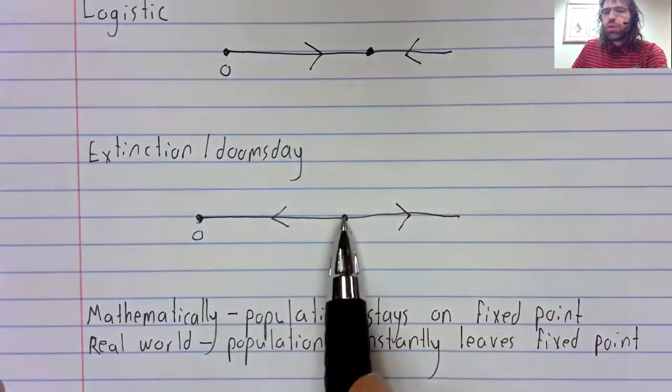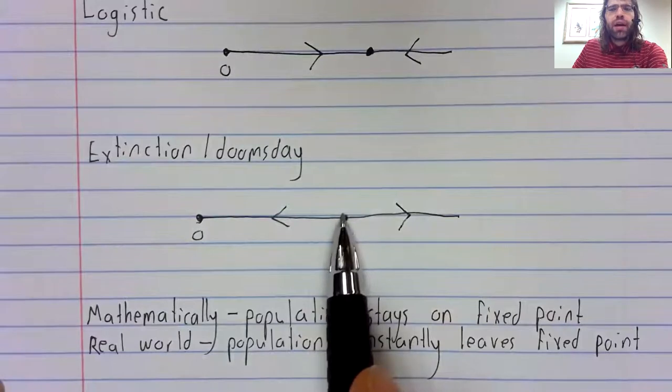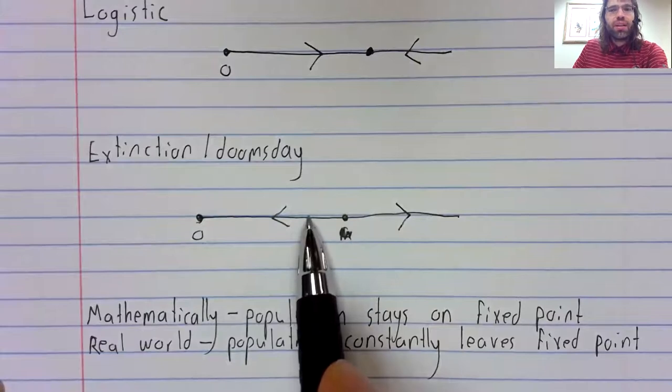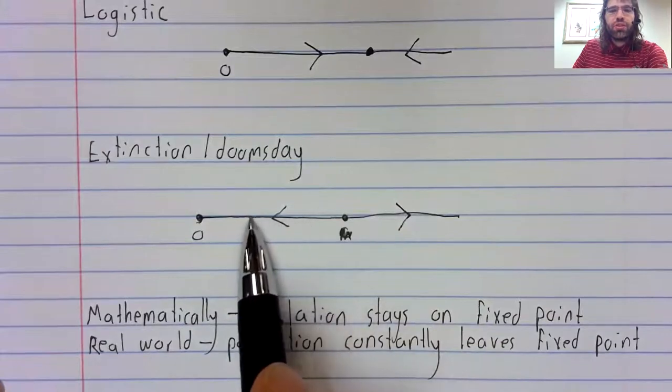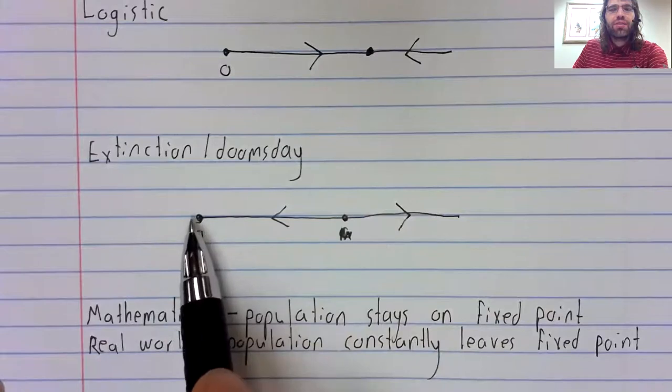Down here, we see a very different behavior. If an unexpectedly harsh winter drives the population below this number, then the population does not rebound. The population continues to the left, and the animals go extinct.